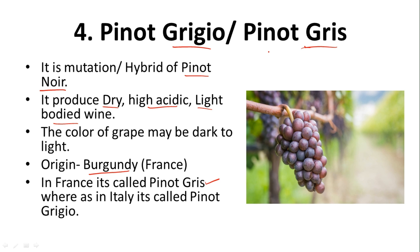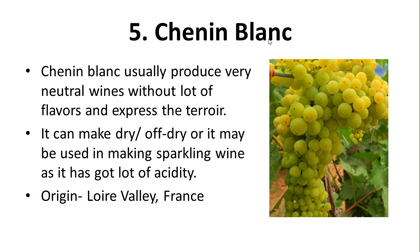The fifth white grape variety is Chenin Blanc. It usually produces very neutral wine — not much flavor, no strong character coming through. It expresses the terroir, meaning the wine reflects where it is grown. It can make dry or off-dry wines, similar to Riesling. It may also be used in making sparkling wine, as it has a lot of acidity — and sparkling wines like Champagne need that acidity. Chenin Blanc originates from the Loire Valley, France.